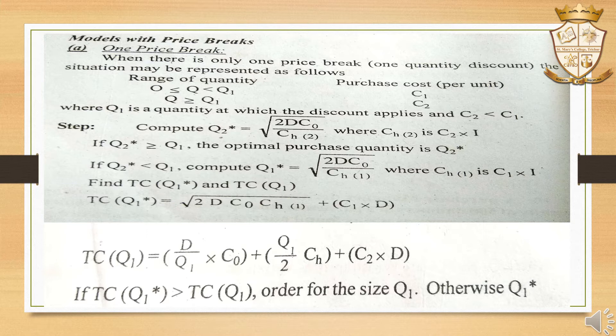We have two cases: C1 and C2 are two purchasing costs. If we use the basis of C1, the holding cost is CH1; on the basis of C2, the holding cost is CH2. Then Q2 star is calculated.